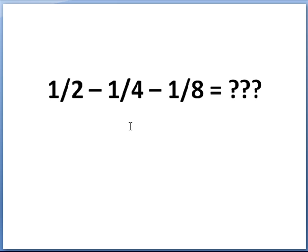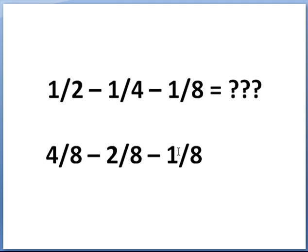Let's take a look at 1 half minus 1 quarter minus 1 eighth. We subtract from left to right and find the least common denominator, which is 8. So 1 half becomes 4 eighths, 1 fourth becomes 2 eighths, and I bring the 1 eighth down. Then: 4 minus 2 is 2, and 2 minus 1 is 1. We wind up with 1 eighth.